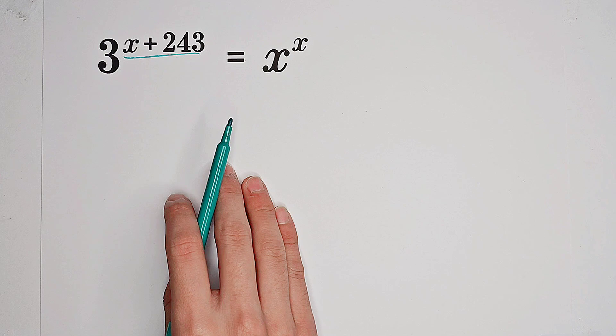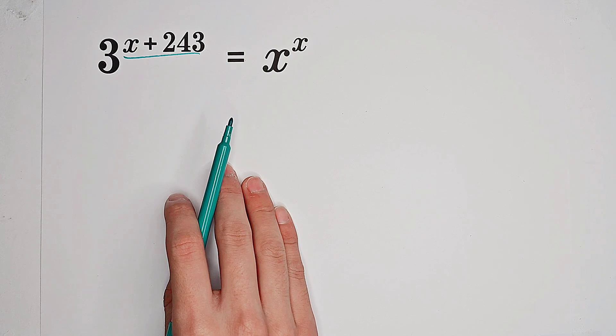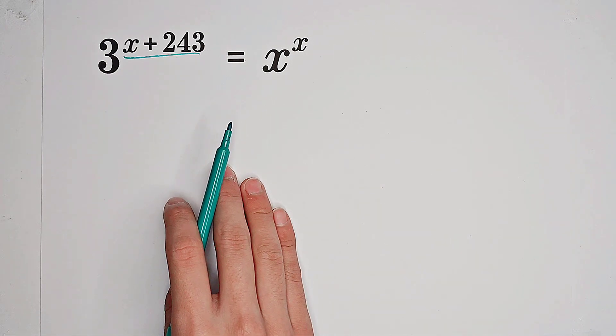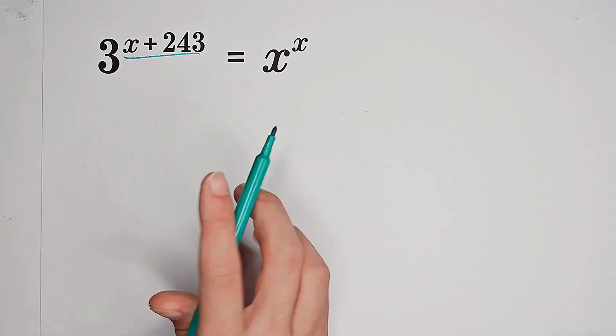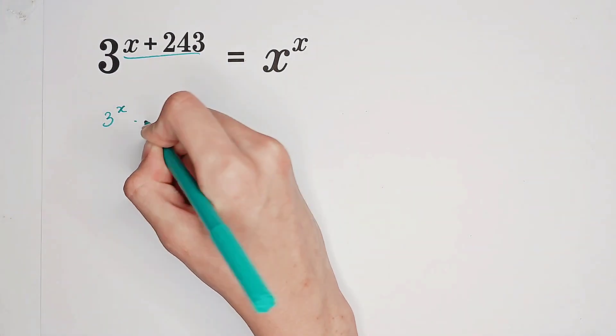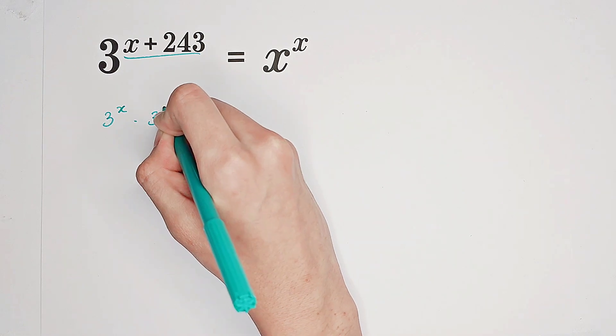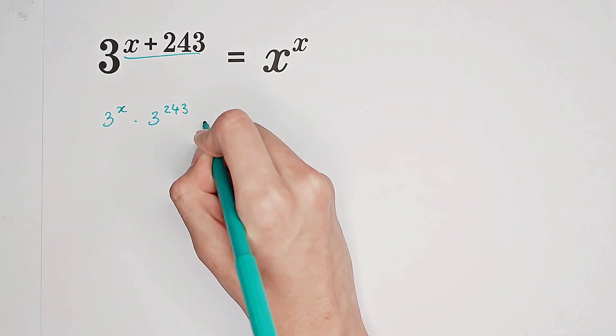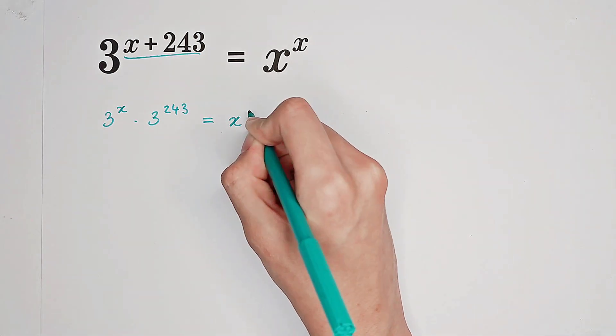On the left side, we have x plus 243 as the exponent. We can actually split it into a product of 3 to the power of x times 3 to the power of 243. And the right-hand side is still x to the power of x.